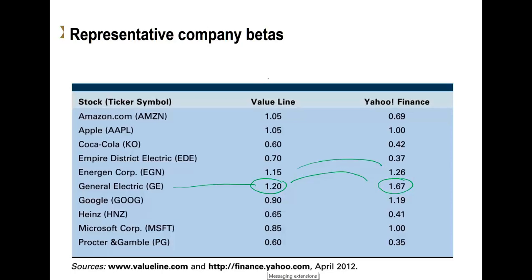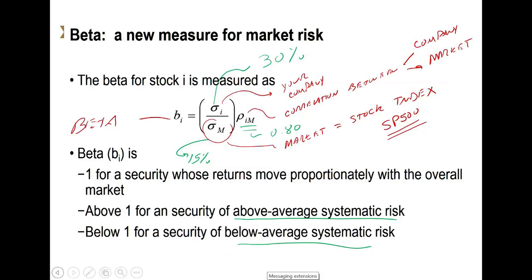Why can betas be so different? In certain aspects, it's because of the way the formula is defined. What is the market? I said the S&P 500, but what if somebody says they're going to use the Dow Jones or the Wilshire 5000 or some other stock index? Then we are using different measures of what the market is. People can choose what they think is the best reflection of the economy, but understand that when you do, you're going to get different beta values.